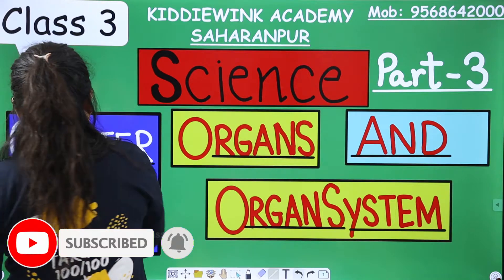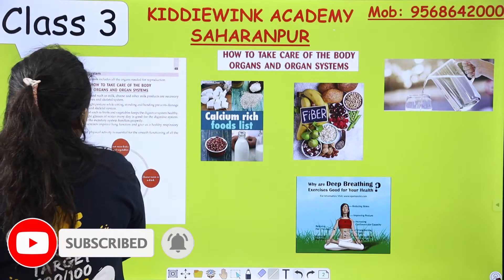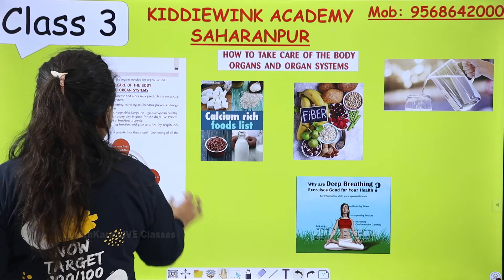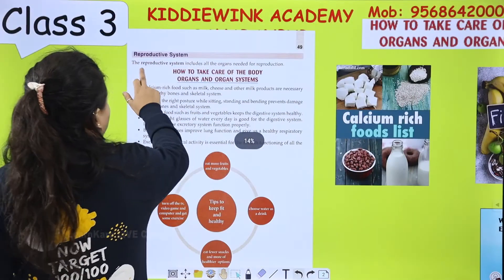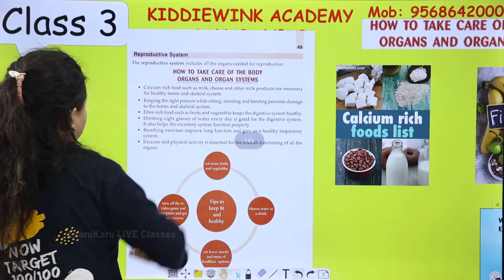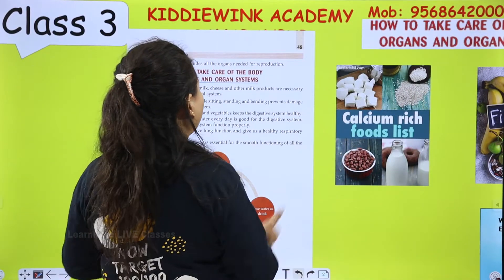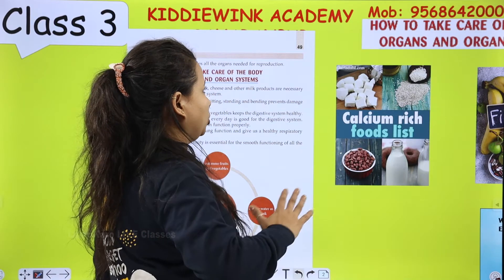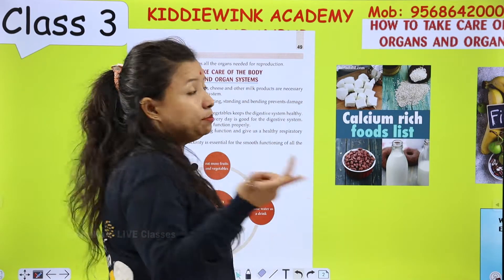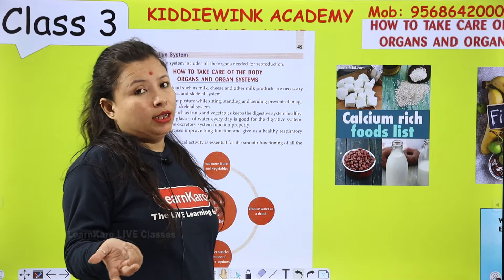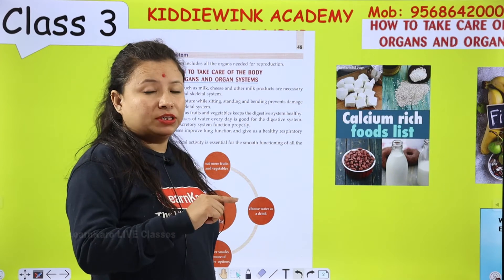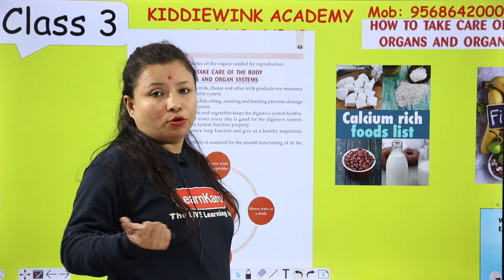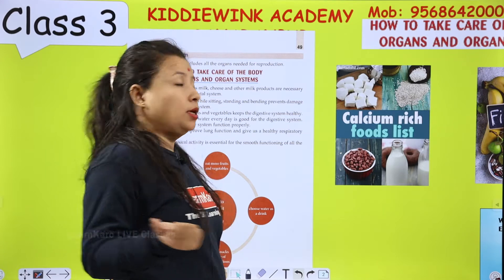So what is the meaning of reproductive system? The reproductive system includes all the organs needed for reproduction. Just like reproduction happens in birds, as you read in the previous chapter, similarly the process of reproduction also happens in human beings.